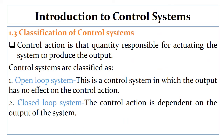We move to the classification of control systems. Control action is the quantity responsible for actuating the system to produce the output. Depending on whether the control action is dependent on the status of the output, control systems are classified into two: open loop systems, where the output has no effect on the control action and there is no feedback provided; and closed loop systems, where the control action is dependent on the output, and feedback is used to compare the input with the outcome.